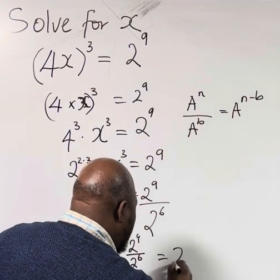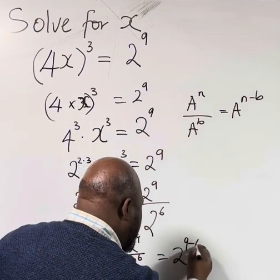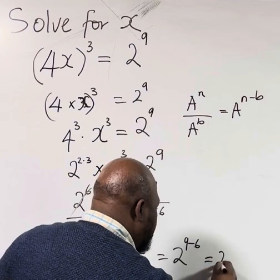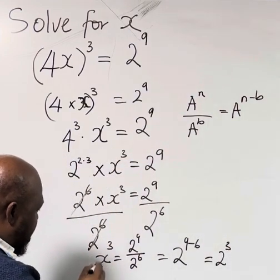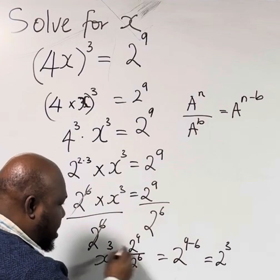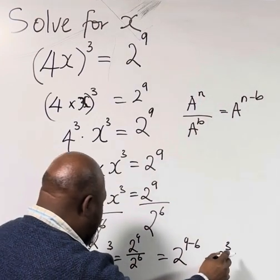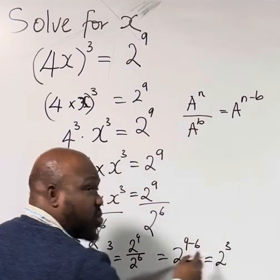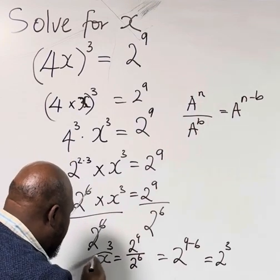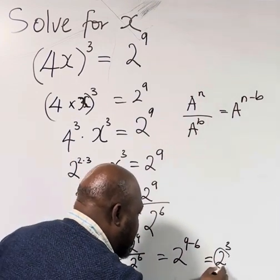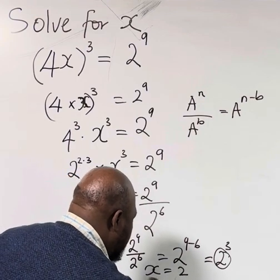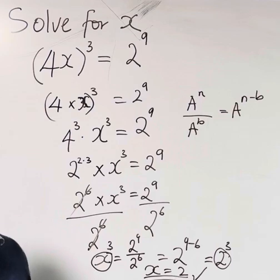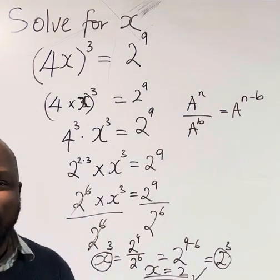That will give us 2^(9-6) which is equal to 2³. Now we have x³ = 2³, so since they are both raised to the same power, our x will be equal to 2. So x = 2. That's it, thank you.